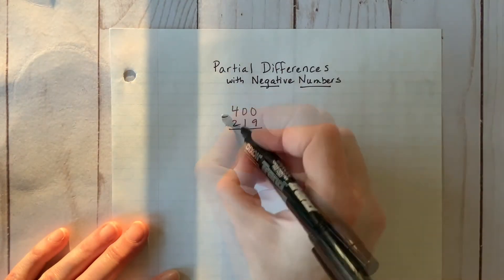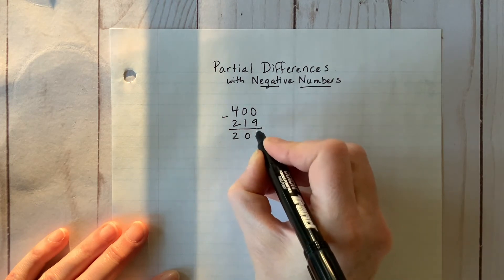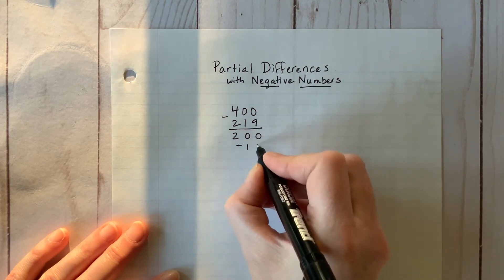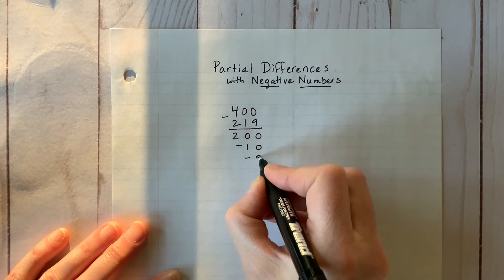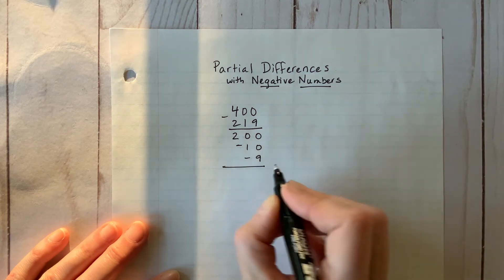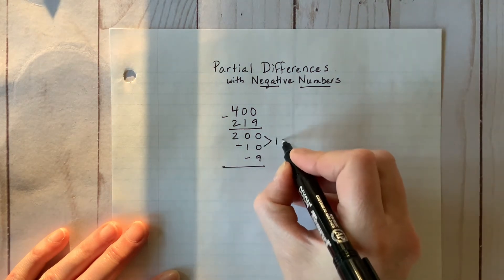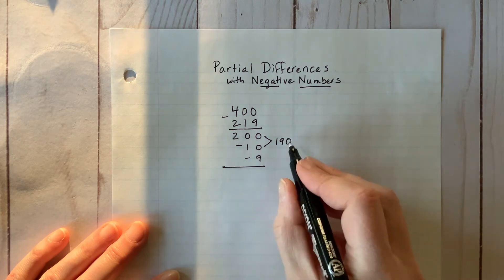When we use this model of partial differences there are really no new tricks to learn. The only issue is that you need to deal with a lot more negative numbers to combine at the end. This requires some mental math practice too as you can see.